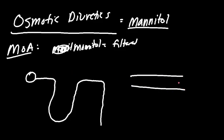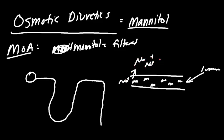Inside the lumen, we have mannitol. Normally, sodium leaves the lumen — it gets reabsorbed — and water follows, using the osmotic gradient. However, when we introduce mannitol into the lumen, it creates an additional solute gradient, so water doesn't want to follow as much. Sodium, potassium, and chloride are all more likely to stay in the lumen.